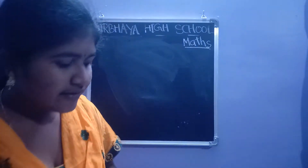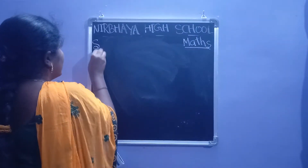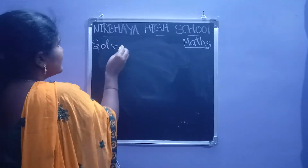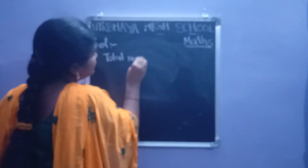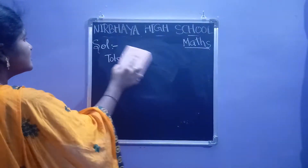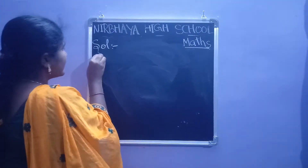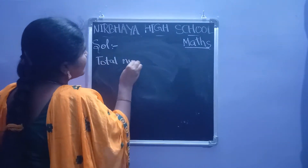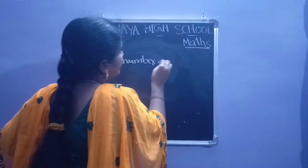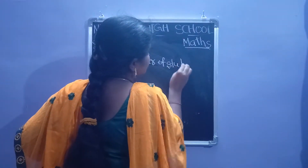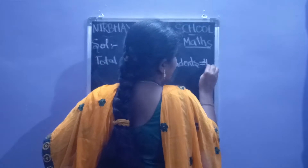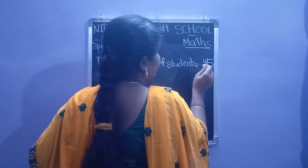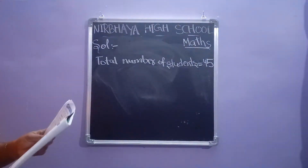Write the solution — but first listen, okay? Don't write now. Total number of students: tell me what is the total number of students. How many students are there? Total: 45. Total number of students are 45.